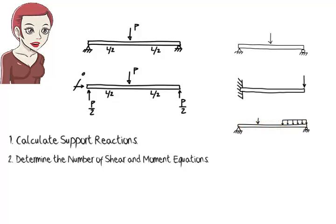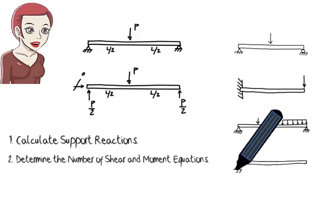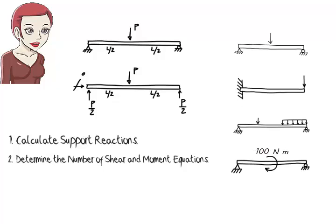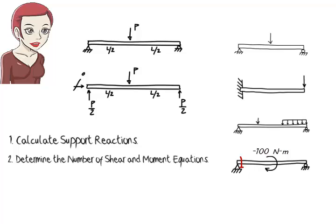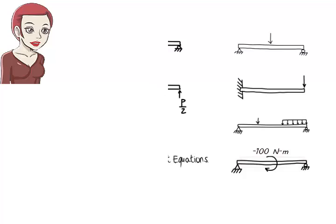From these examples, it may appear that the required number of shear equations is always equal to the required number of moment equations. But this is not necessarily true. We could have loading patterns that make the required number of moment equations more than that of shear equations. Consider this beam, where the beam is subjected to a concentrated moment at its midpoint. This causes a sudden drop, a discontinuity, in the beam's internal bending moment at that point. Consequently, two equations are needed for representing moment in the beam — one for the left segment up to the point of discontinuity, and another past it. However, the concentrated moment does not cause any abrupt change in shear. Therefore, we can represent shear in the beam using one equation only.